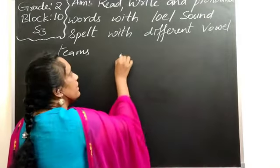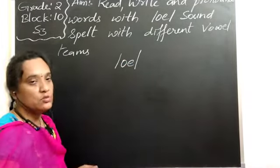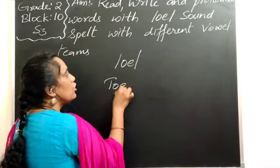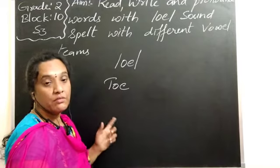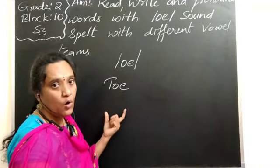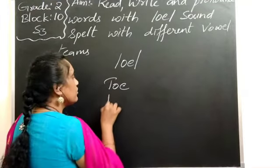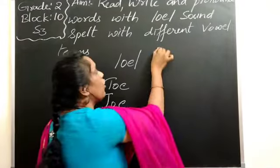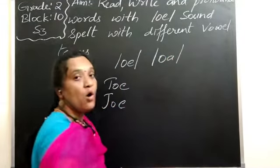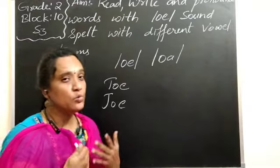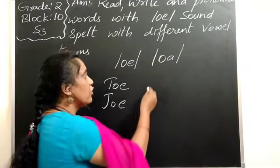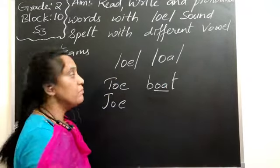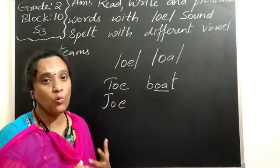The sound is the same when it is spelt with different vowel teams. If we see the word 'to,' the letter O gives the O sound — the vowel sound. 'Joe' also gives a sound of O. Now if we go for O-A, it also gives the same O sound. So we are going to identify the sound of O. If we go for 'boat,' O-A-T, it also gives the O sound. So both O-E and O-A are giving the same vowel sound.